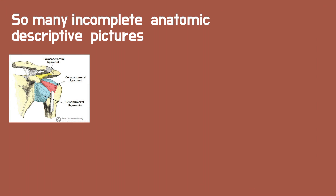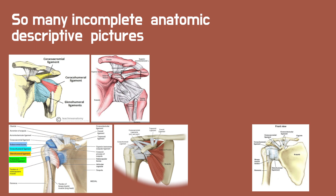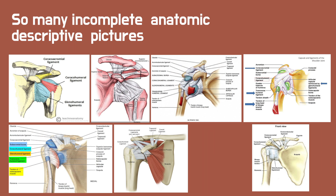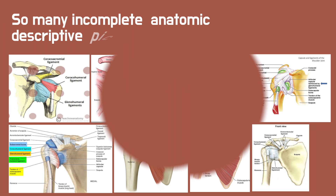Numerous pictures describe the coracohumeral ligament, but most of them describe only the humeral attachment site and do not describe the coracoid attachment site.